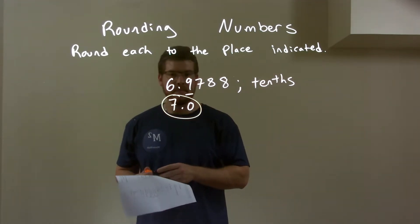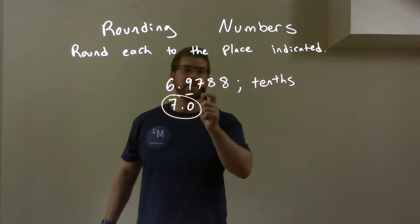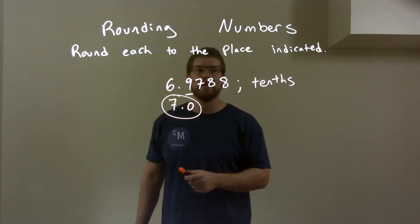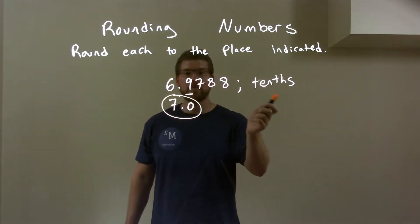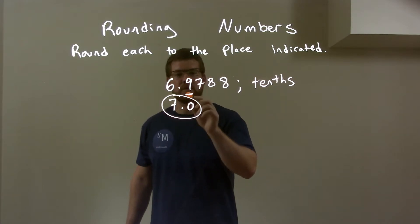So, quick recap. We're given 6.9788. We're rounding to the nearest tenths. The tenths I indicated was this nine. We look to the right at the seven.